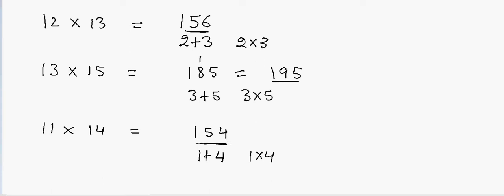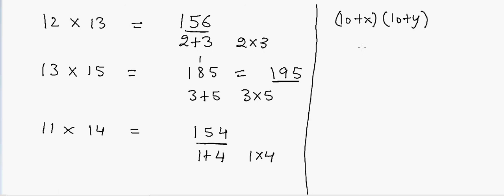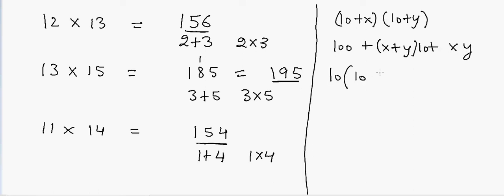So it's 154. Let's look at how this trick works. If we have 10 plus x and 10 plus y, we are taking 10 as a base and these numbers are close to 10. If we resolve this, it will be equal to 100 plus 10 times x plus y, plus xy.